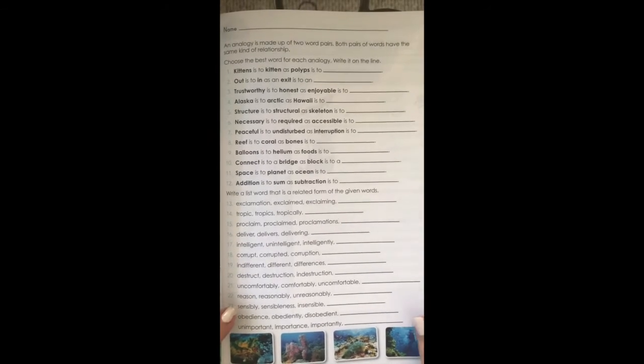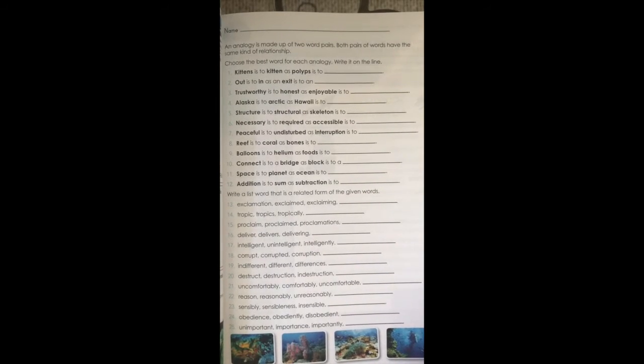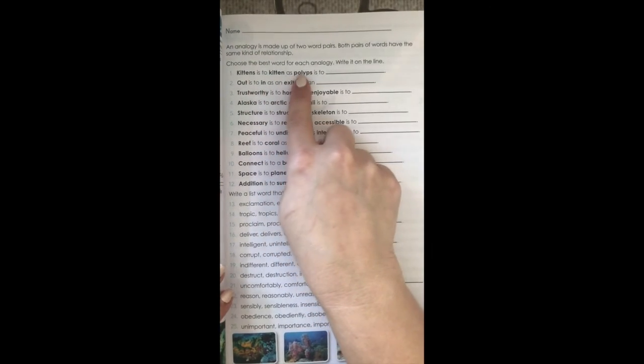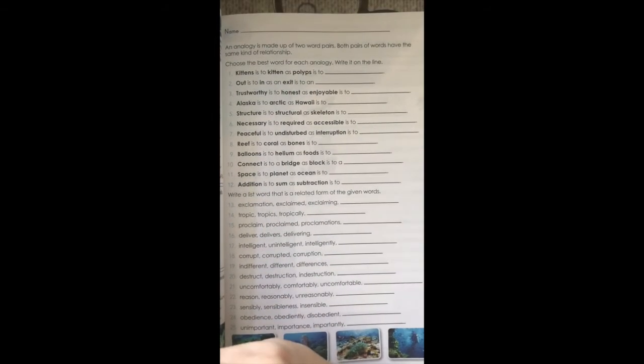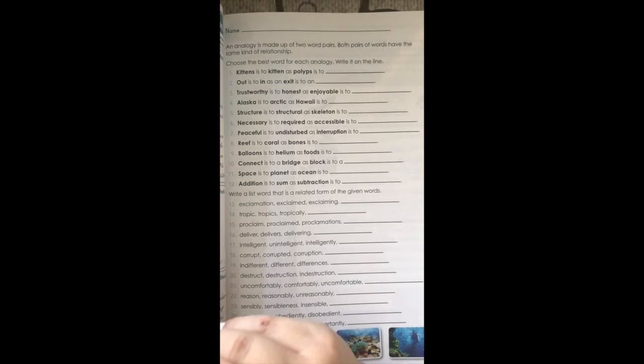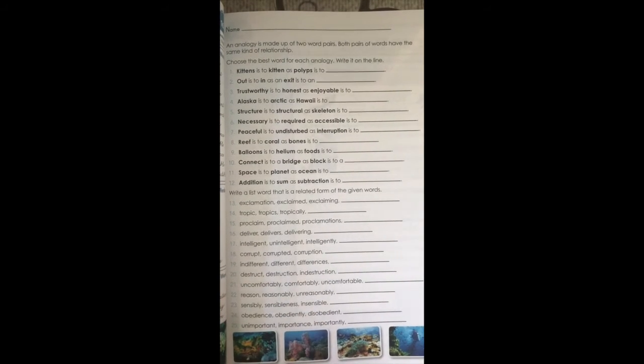For Wednesday, you also have what are called analogies, and we have done this once before. If you need help, since it's a little tricky, we can definitely go over it through Zoom. You're going to match how words relate to each other — you're not looking for meanings, you're looking at how the words relate. Both pairs of words have the same kind of relationship. I'm going to do at least two of them so you can get the idea.